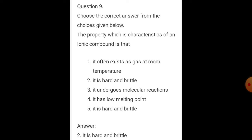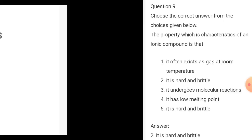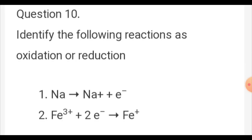Question number 9: choose the correct answer — which property is characteristic of ionic compounds? Options: often exists as a gas at room temperature; it is hard and brittle; it undergoes molecular reaction; it has low melting point. The answer is option 2 — it is hard and brittle.